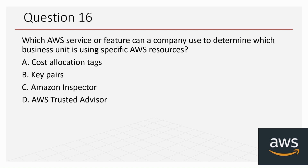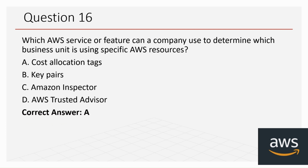Question 16: Which AWS service or feature can a company use to determine which business unit is using specific AWS resources? The options are: A) Cost Allocation Tags, B) Key Pairs, C) Amazon Inspector, and D) AWS Trusted Advisor. The correct answer is A, Cost Allocation Tags — this service lets a company determine which business unit is using specific AWS resources.